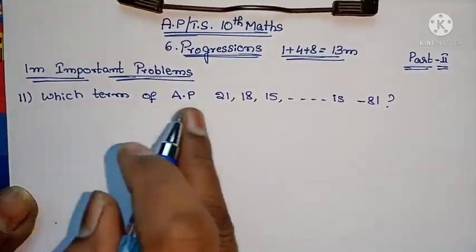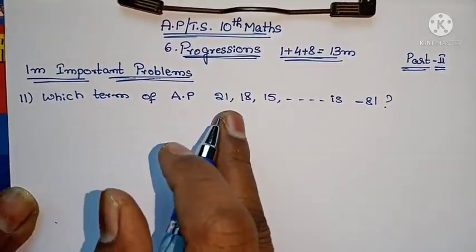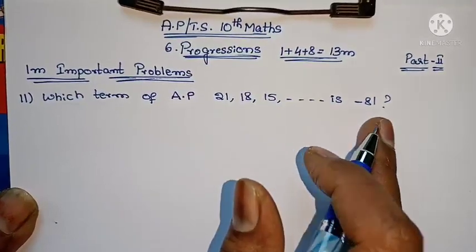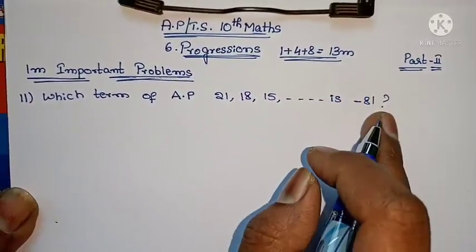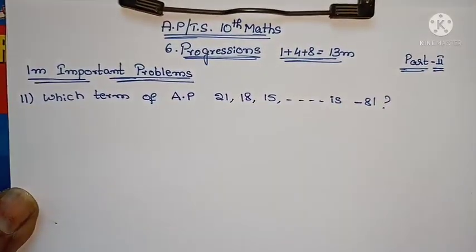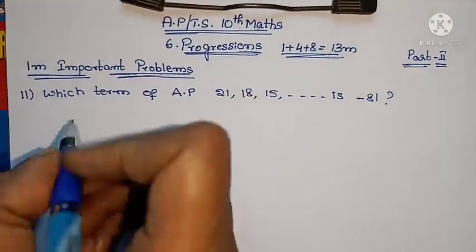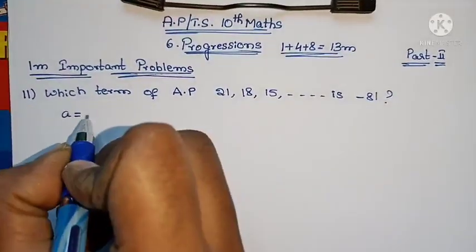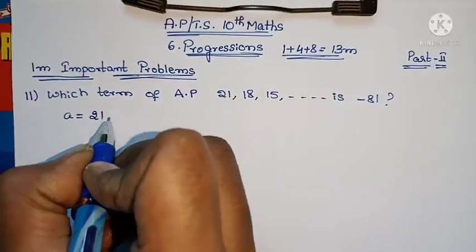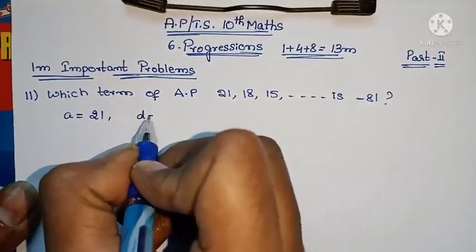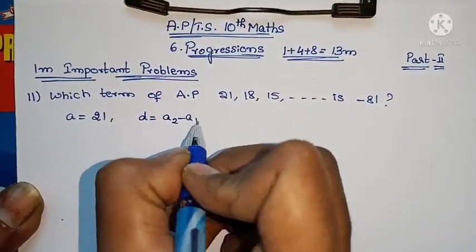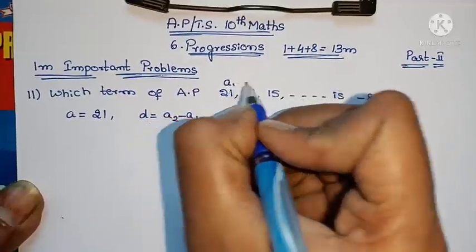Question: Which term of AP 21, 18, 15 is -81? We need to find which term -81 is. First, let's note: a equals 21, d equals A2 minus A1.